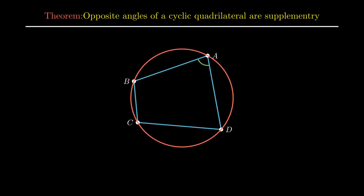The first theorem of cyclic quadrilateral states that the sum of a pair of opposite angles in a cyclic quadrilateral is supplementary. That is, sum of angle A and angle C equals 180 degrees, and sum of angle B and angle D is also 180 degrees.